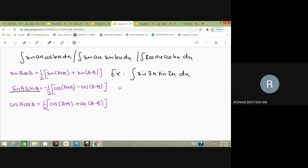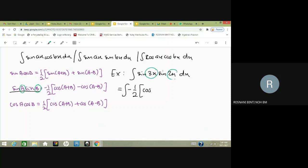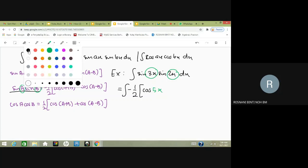Now, before we integrate, we first change the form of our trigonometric expression. It will become negative one-half times cos of... Let's identify A and B. This is our A, this is our B. So we have cos(A + B), which is cos(3x + 2x), giving us cos 5x, plus...